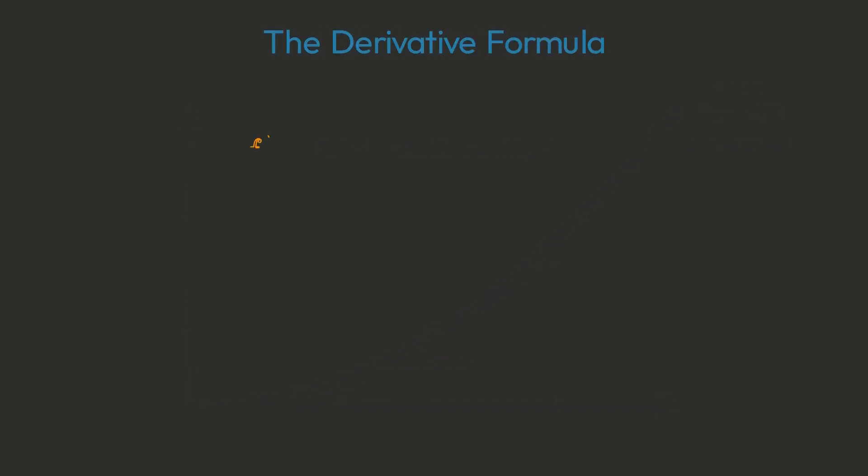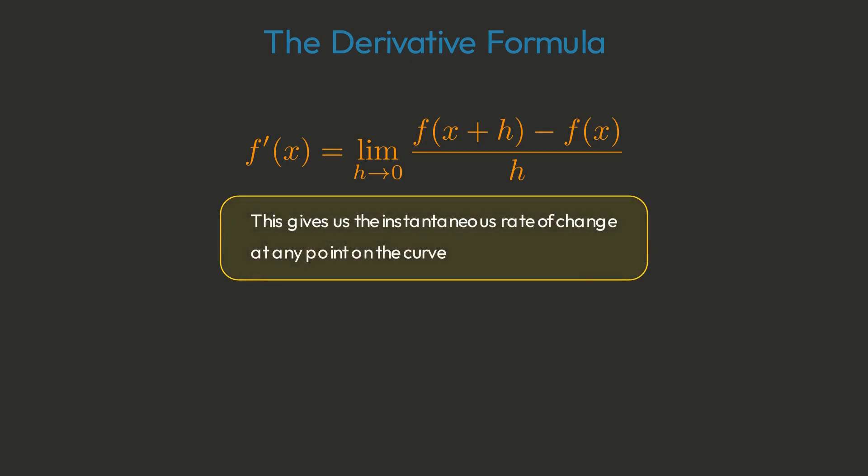The mathematical machinery behind this process is captured in calculus's most important formula: f prime of x equals limit as h approaches zero of f of x plus h minus f of x divided by h.